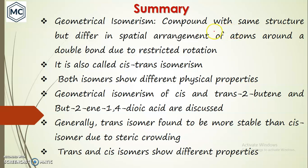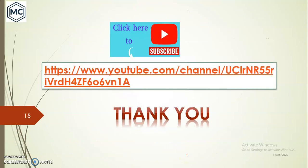In summary, geometrical isomerism involves compounds with the same structure but differing spatial arrangement of atoms around a double bond due to restricted rotation. It is also called cis-trans isomerism, and both isomers show different physical properties. Geometrical isomerism of cis/trans-2-butene and but-2-ene-1,4-dioic acid were discussed. Generally, the trans isomer is found to be more stable than cis. Thank you for watching.